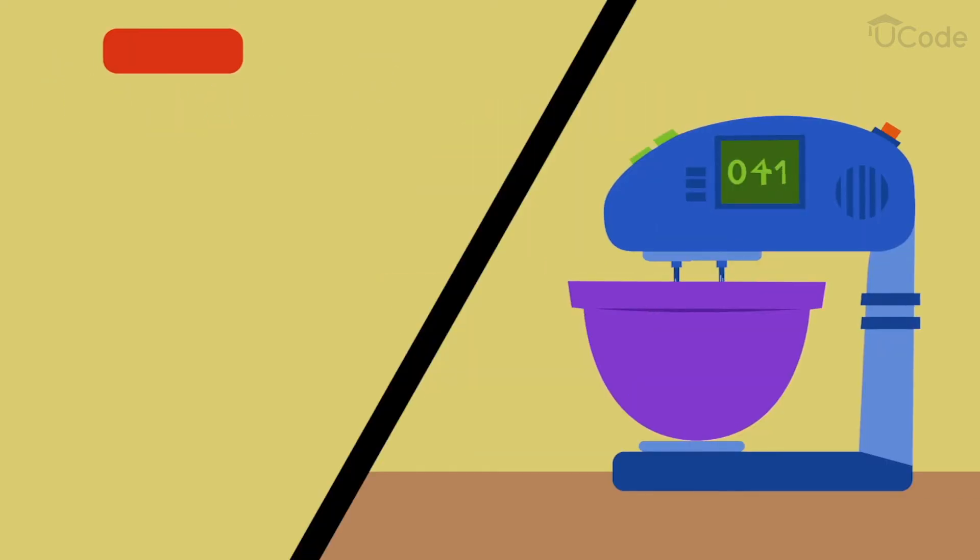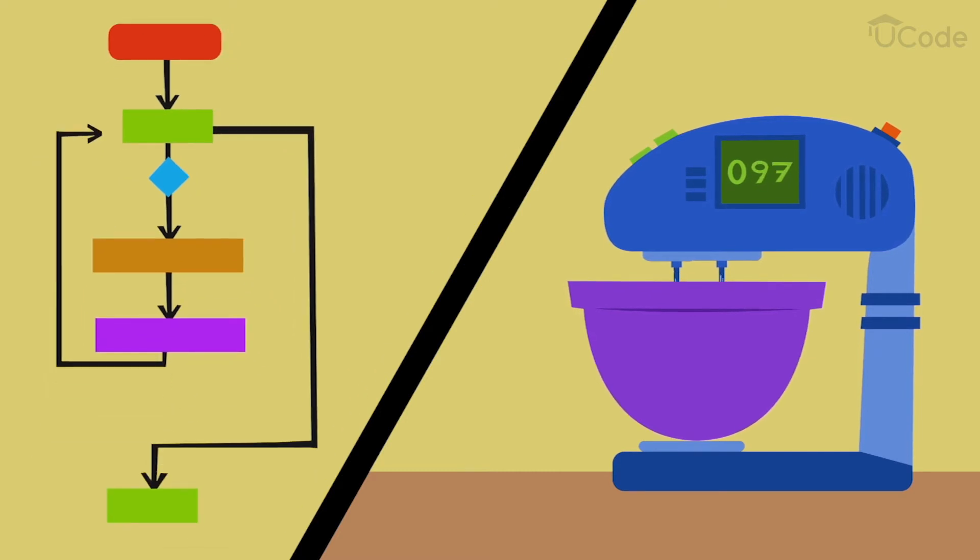The FOR loop executes the code a number of times without testing conditions. It uses a counter, and each time it executes the code, for example, the STIR-ONCE code, it increases its count by one. It does this until the goal has been reached.